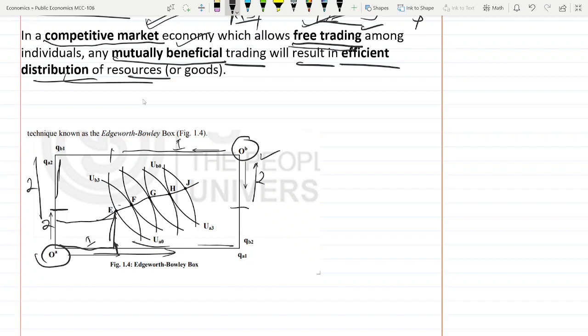Then there is the indifference curve for user A, then another indifference curve. These are all indifference curves for user A, and these are the indifference curves of user B. Wherever user A and B's indifference curves are tangent to each other, those points are Pareto optimal points. All these points when they meet make a curve. This curve is called the contract curve.